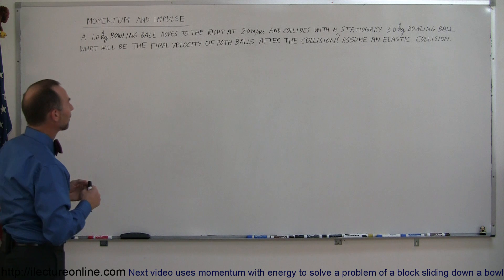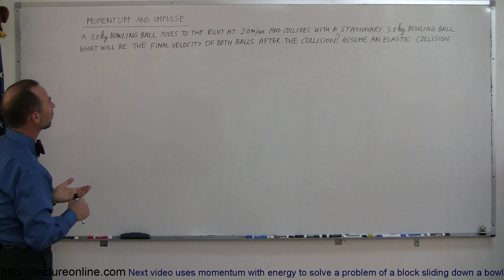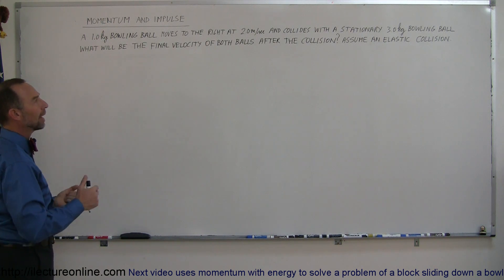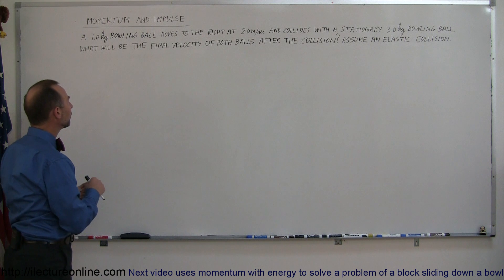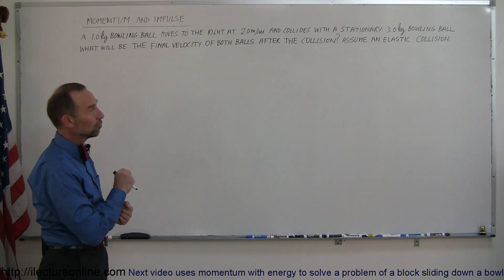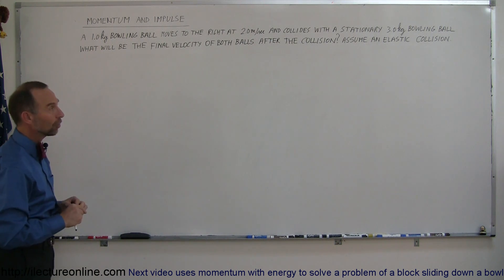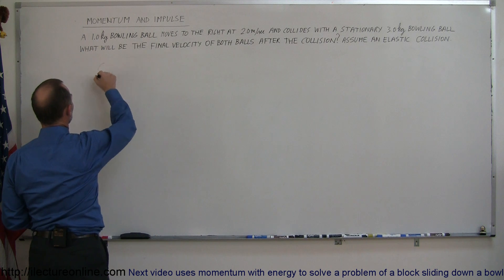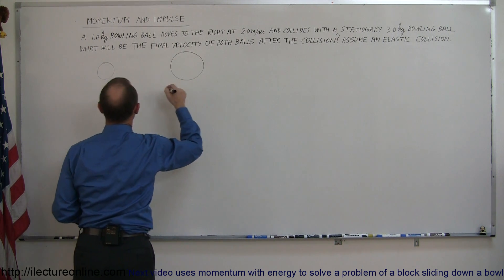If you want to solve a problem like this, here's the example: we have a 1 kilogram bowling ball moving to the right at 2 meters per second, and it collides with a stationary 3 kilogram bowling ball. What will be the final velocity of both balls after the collision, assuming an elastic collision? Let's draw a little picture — we have a smaller bowling ball colliding with a bigger bowling ball which is stationary.